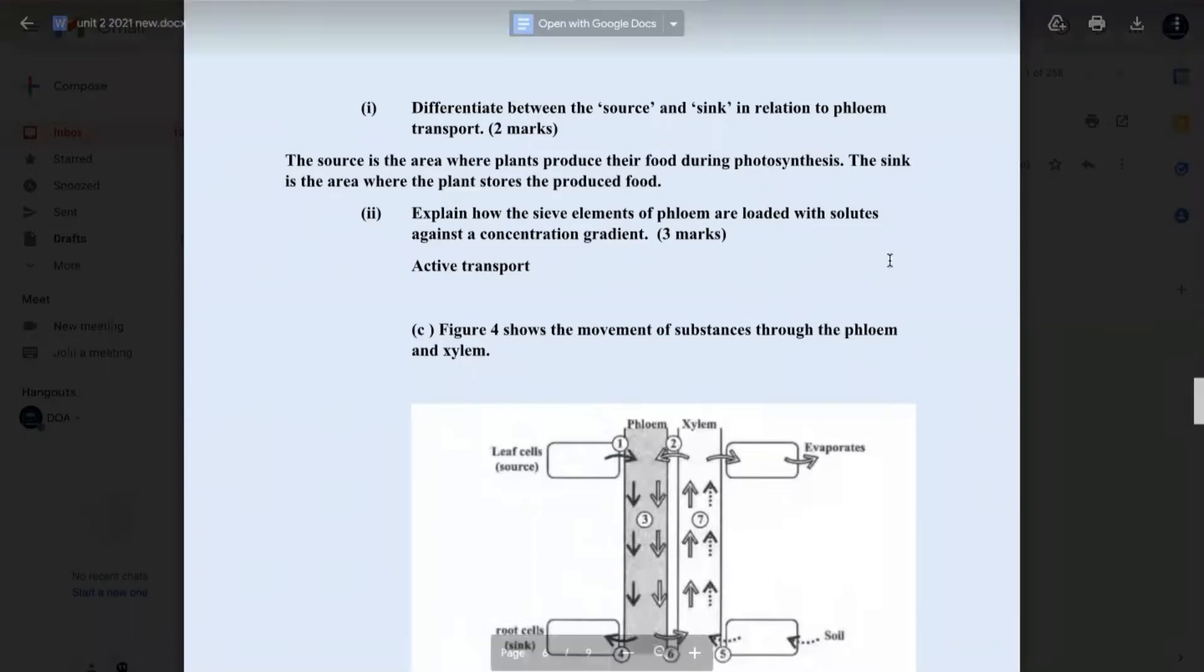Part 2, explain how the sieve elements of phloem are loaded with solutes against a concentration gradient. Look at the key here. It's loaded with solutes against a concentration gradient. Right there, you should be thinking about active transport. Active transport, specifically in the companion cells, because that's where the active transport occurs. Recall, at the beginning of the question, they spoke about a co-transporter molecule. That was them giving you the clue to the answer here. So, sucrose, along with protons, they are carried through a co-transporter protein into the companion cells. Once it gets into the companion cells, remember now the companion cells are annexed to the sieve elements, and sucrose is going to be in a high concentration in the companion cells and low concentration in the xylem. So, what's going to happen is that sucrose is going to diffuse from the companion cell into the sieve elements through the plasma desmata.